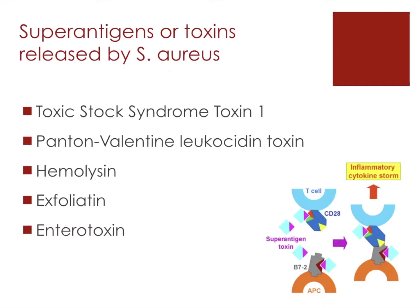Alongside all of this, Staph aureus has the ability to produce superantigens or toxins, and they can cause several problems. There are five in particular that are very important to know: toxic shock syndrome toxin 1 (TSST-1), Panton-Valentine leukocidin toxin (PVL), hemolysin, exfoliatin, and enterotoxin.